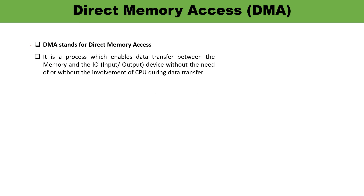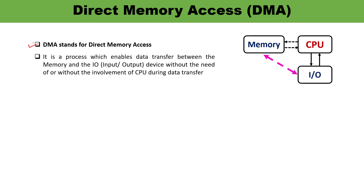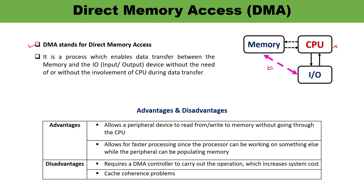DMA stands for Direct Memory Access. Direct Memory Access means there is no intervention, no involvement of the CPU. Without the involvement of the CPU, there is a direct data transfer between the IO devices and the memory. I have discussed the advantages and disadvantages — you must remember those as well.